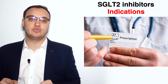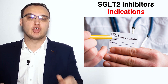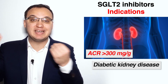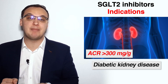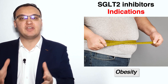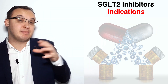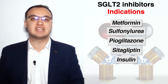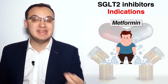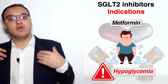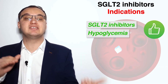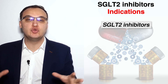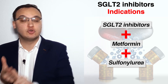The indications for SGLT2 inhibitors include atherosclerotic cardiovascular disease with heart failure, diabetic kidney disease with a urine albumin-to-creatinine ratio greater than 300 mg per gram and a GFR less than 90 ml per minute, and obesity. They can be combined with metformin, sulfonylurea, pioglitazone, sitagliptin, and insulin. SGLT2 inhibitors are a good second agent with metformin for obese patients with high risk of hypoglycemia, and can also be used as a third agent in triple therapy.